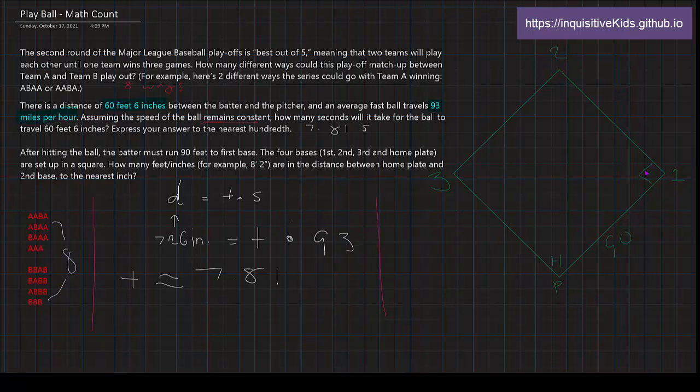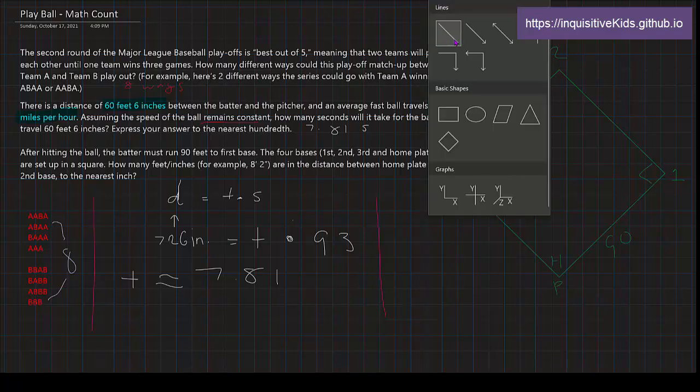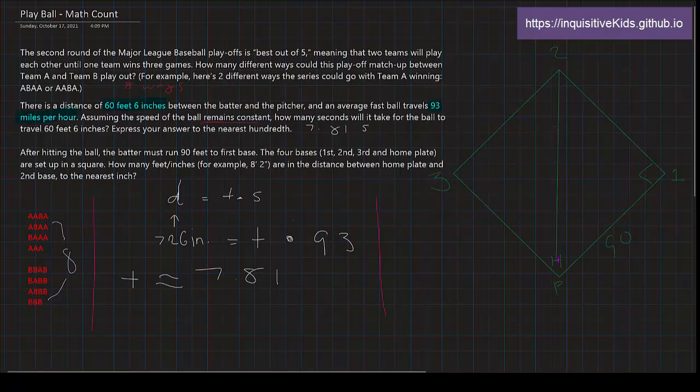Well, then we know the square. So if we know that this is a right triangle, then I'm going to draw a line. This is what we're trying to find. We are trying to find how much is from second base to home plate. Well, this is the Pythagorean theorem over here, because we know this is also 90 feet.